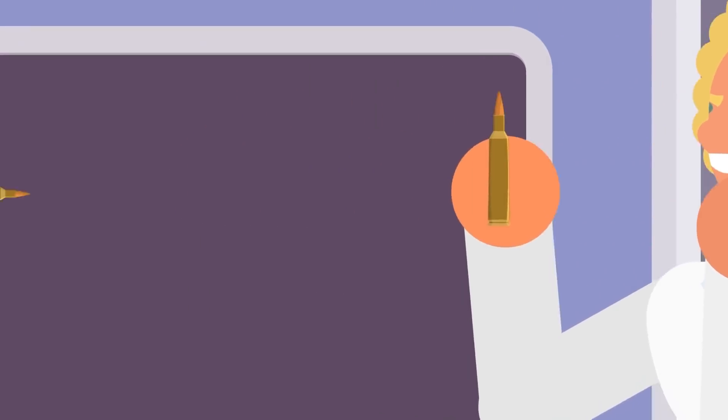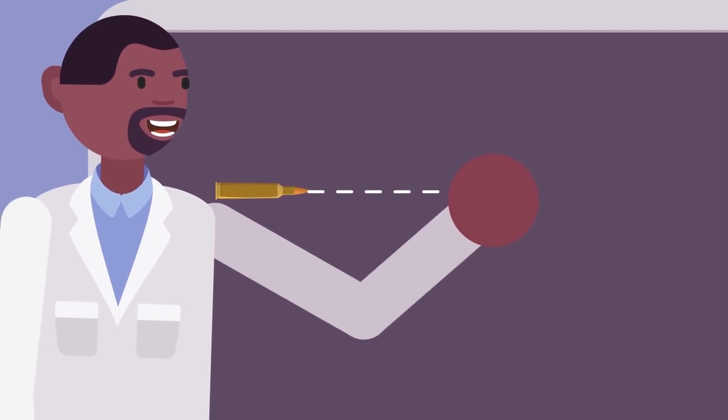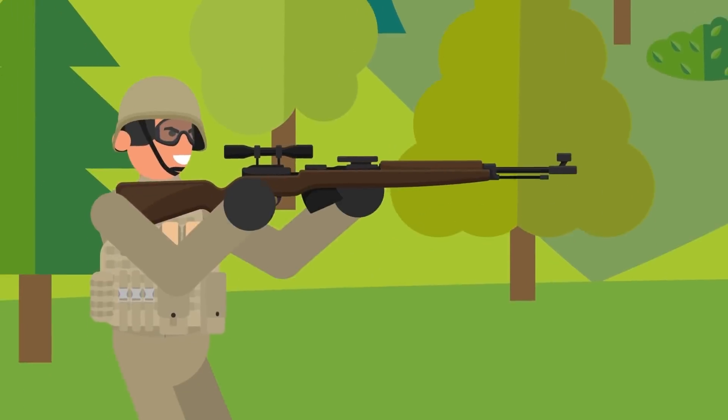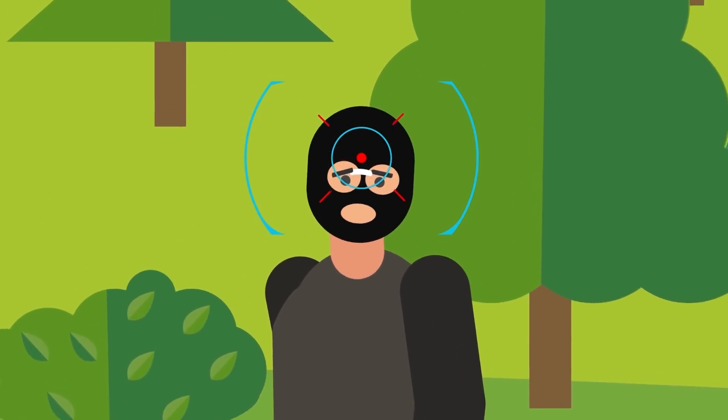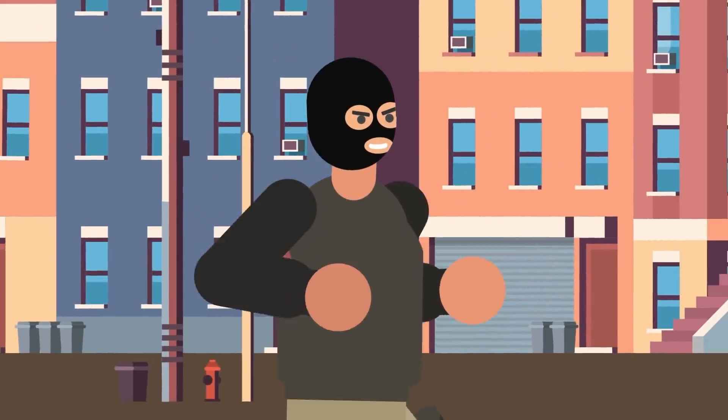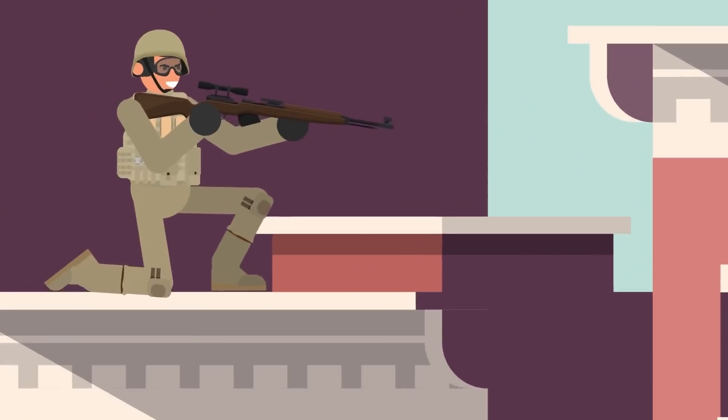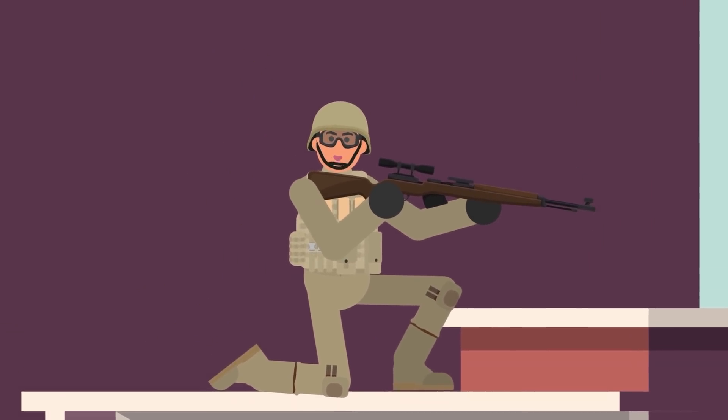But DARPA's awesome and terrifying exacto ammunition could make this a thing of the past. These bullets are still in development and many of the details of their production are top secret, but it's believed exacto ammunition is fitted with built-in guided systems that allow them to actively seek their targets after being fired. If snipers weren't scary enough already, the completion of exacto bullets might make them truly impossible to escape.